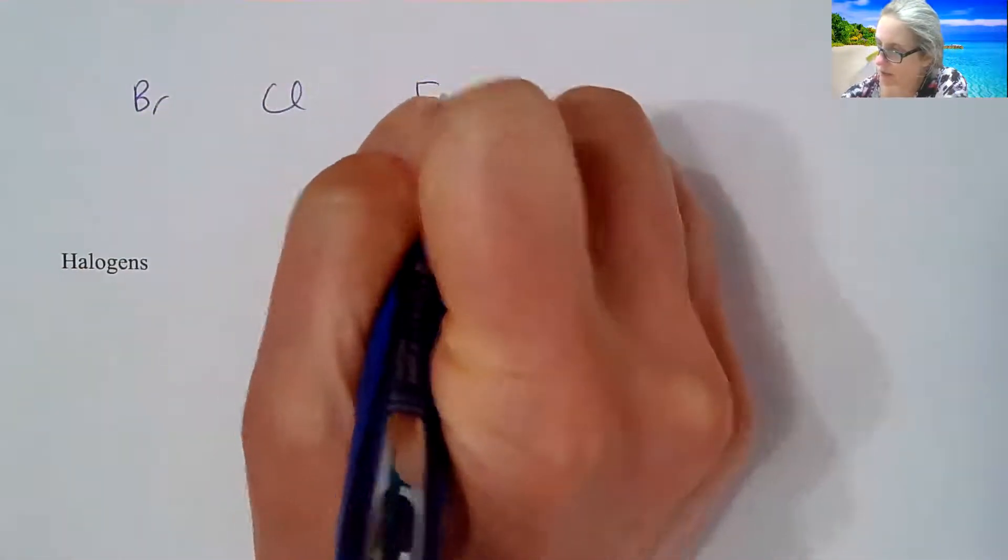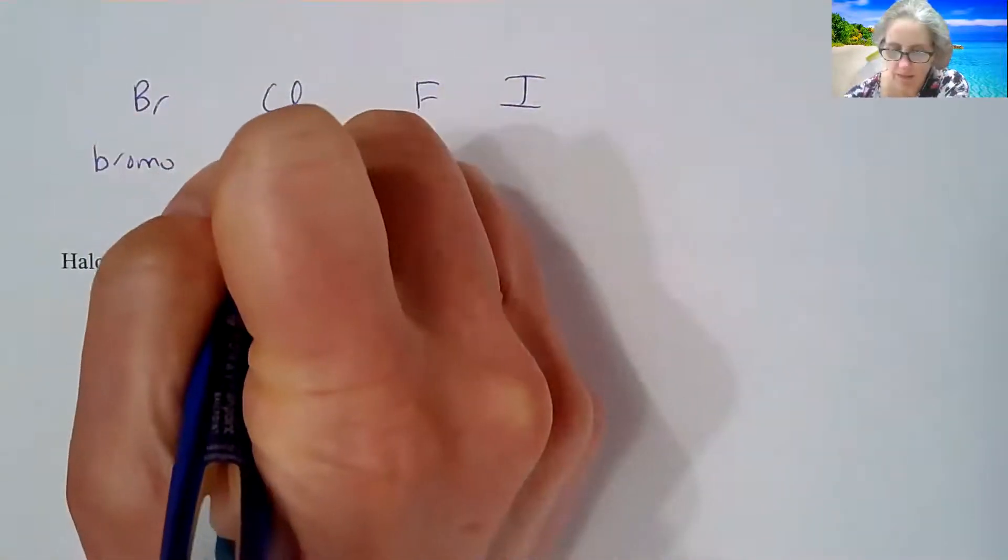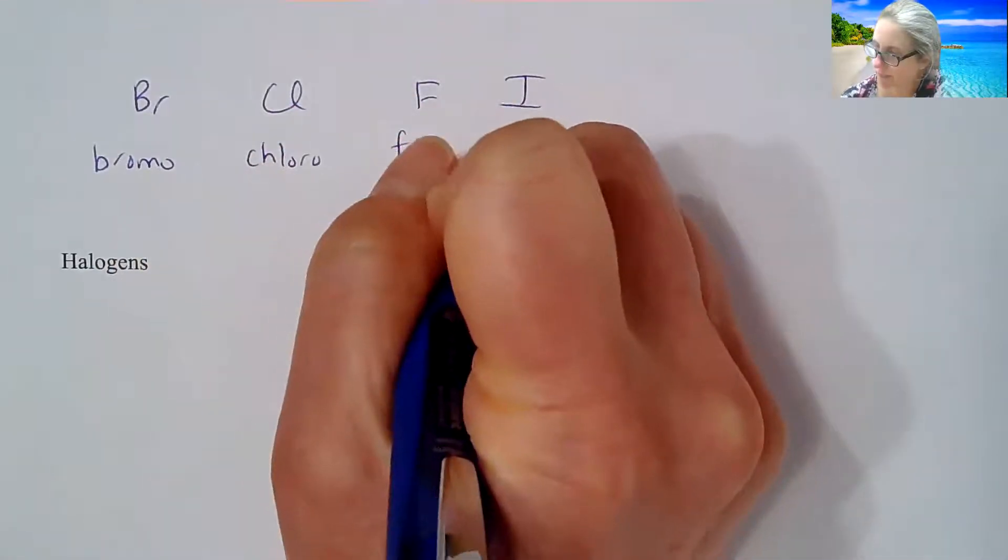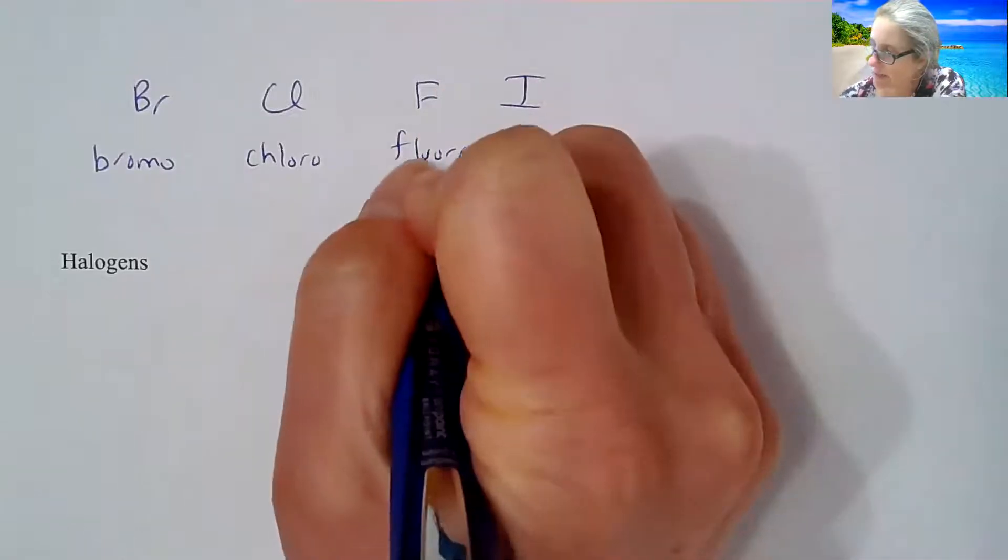So I'm going to write the four halogens that we're going to be seeing, and we're going to be calling them a particular naming system. So anytime you have bromine in the molecule, it's going to call it bromo. Cl is going to be chloro, F is going to be fluoro, and I is going to be iodo.